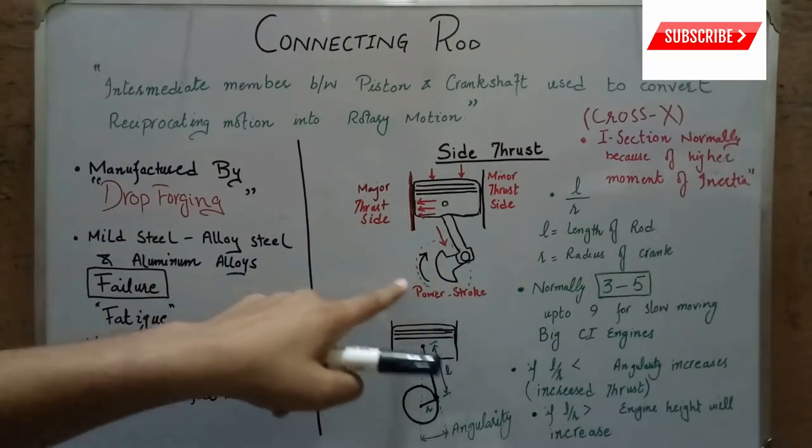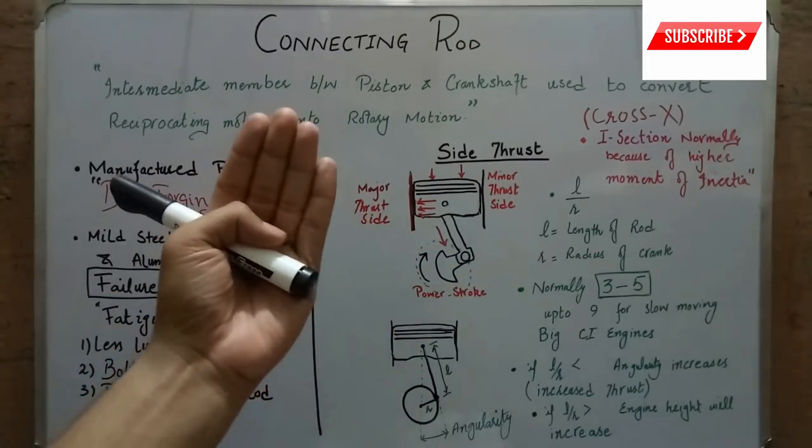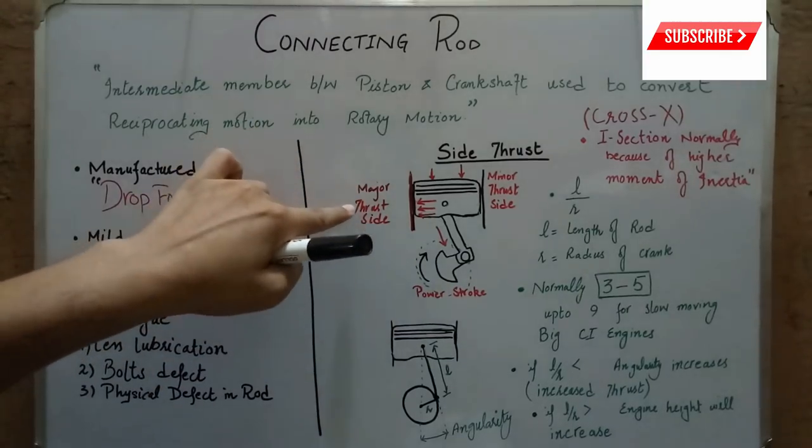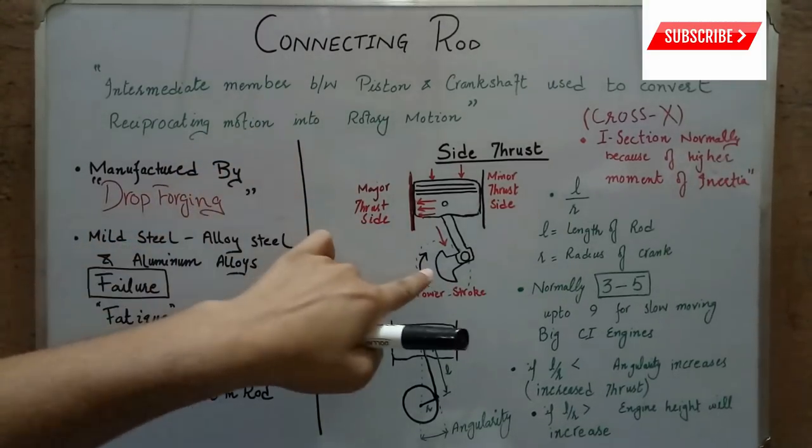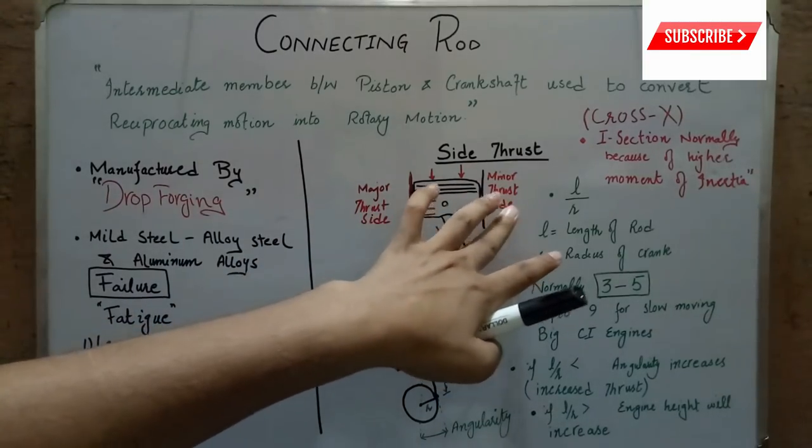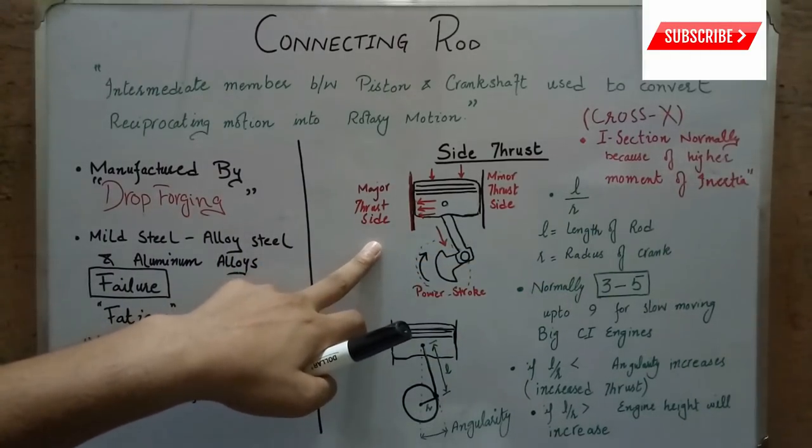If the crankshaft is rotating clockwise seeing from the front of the engine where there is a timing chain, then the left-hand side will be the major thrust side. If the crank is rotating counterclockwise, then the right-hand side will be the major thrust side and the left-hand side will be the minor thrust side.